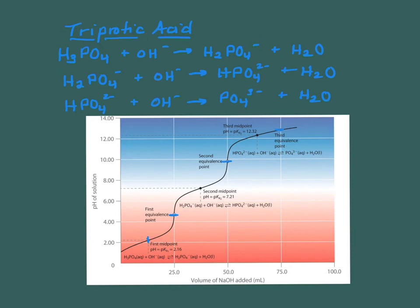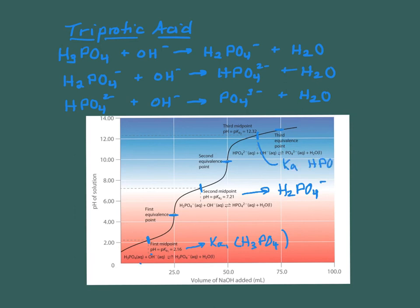Again, at your first midpoint, pH equals pKa, so you can use this to find Ka1 — that would be for phosphoric acid. Remember, it's the half equivalence point, not the equivalence point. You could also use the second midpoint to find the Ka for H2PO4 minus. Here's the second equivalence point, and here's your third midpoint, so you can use that to find the Ka for HPO4 2-minus. Note that the same volumes are taken to get from the first equivalence point to the second to the third. They're not much more complicated — they just have as many equivalence points as reactions you can write. This third one gets a little buried, but we'll do it in the lab and see how we can find it.